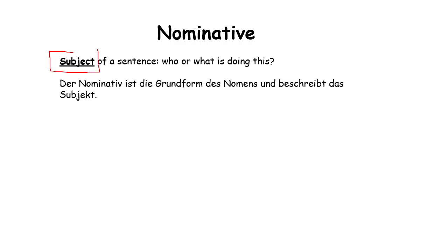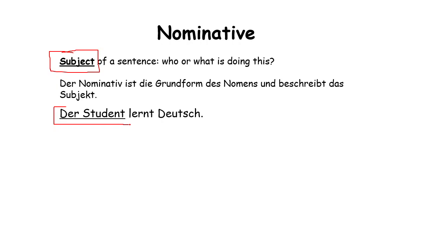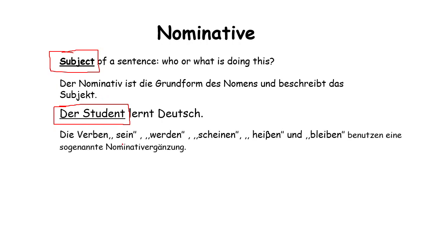Nominative is the subject of a sentence. For example: 'Der Student learned Deutsch.' In this sentence, 'Der Student' is the subject. Hence, nominative is the subject of the sentence — 'Der Student' is nominative.